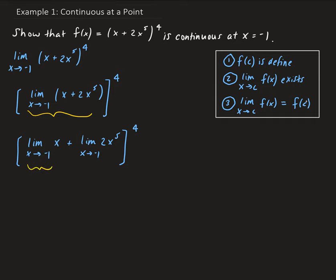The limit of x as x approaches negative 1 gives us negative 1. Then the limit of 2x to the fifth as x approaches negative 1: negative 1 to the fifth power is negative 1, times 2 gives negative 2. So we have negative 1 plus negative 2, which is negative 3, raised to the fourth power, and that gives us 81.